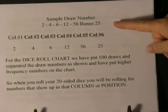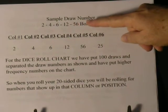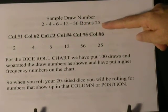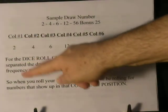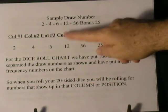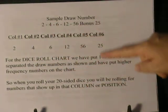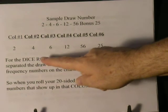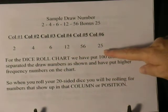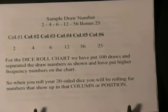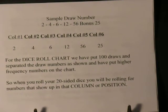Sample draw: two, four, six, twelve, fifty-six, and bonus twenty-five — column one, two, three, four, five, six. For the dice roll chart, we have put one hundred draws and separated the draw numbers as shown, and have put together higher frequency numbers on the chart.